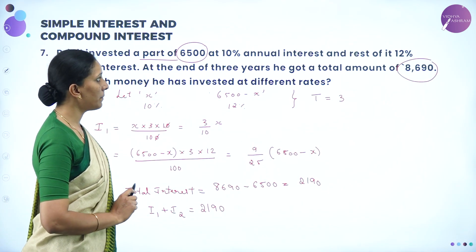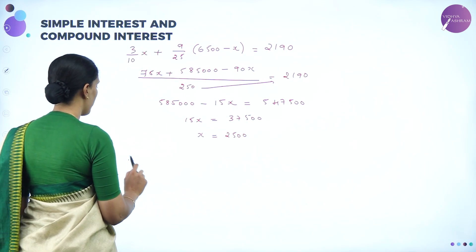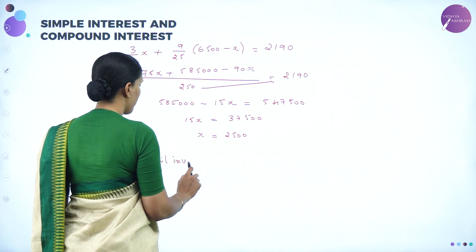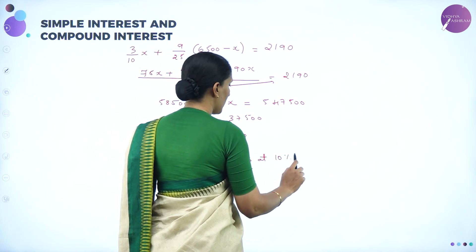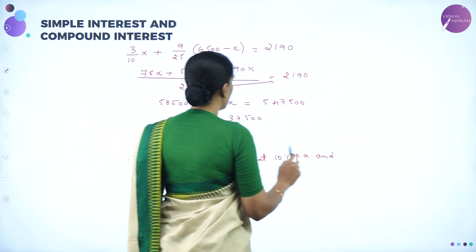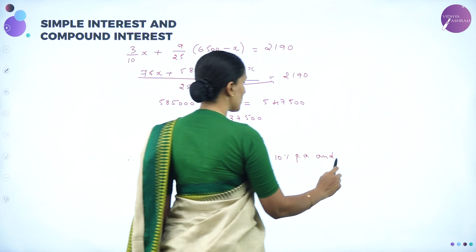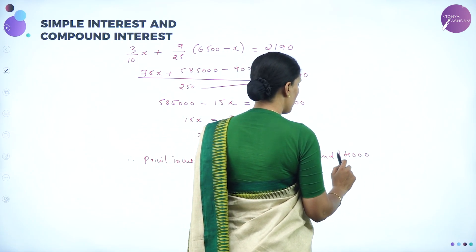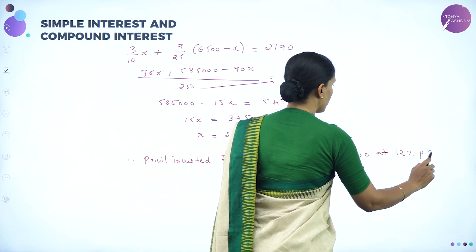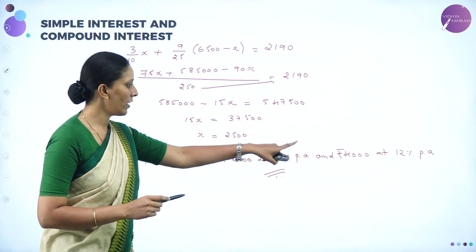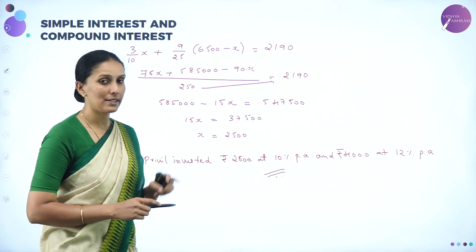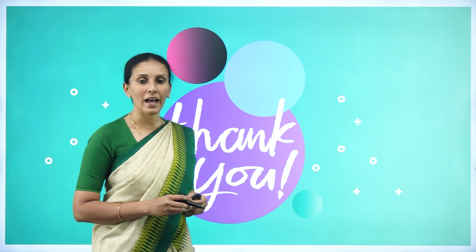So x = 2,500 is the amount invested at 10% per annum. Therefore Privil invested Rs 2,500 at 10% per annum and 6,500 minus 2,500 = Rs 4,000 at 12% per annum. Today in this session we have taken up problems on simple interest. I will meet you in the next session. Until then, keep watching, keep learning, and keep exploring. Thank you.